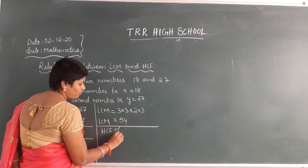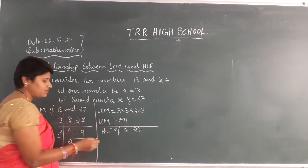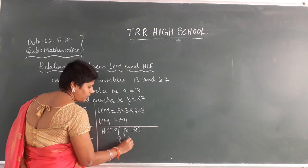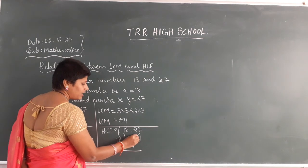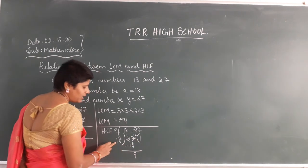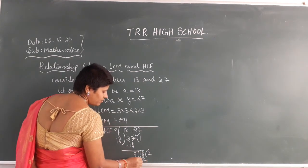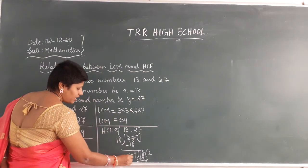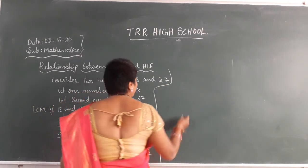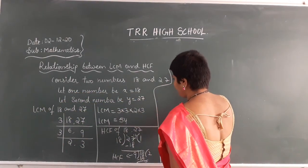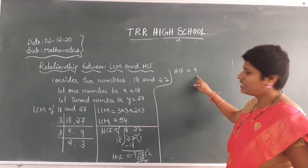Now HCM of 18 and 27. I will use the continuous division method. 18 goes into 27 once: 18 ones are 18. Subtract: 27 minus 18 gives 9. Again, the divisor becomes 18. 9 goes into 18 twice: 9 twos are 18, remainder 0. So the HCM is 9. So I got LCM as 54 and HCM as 9.